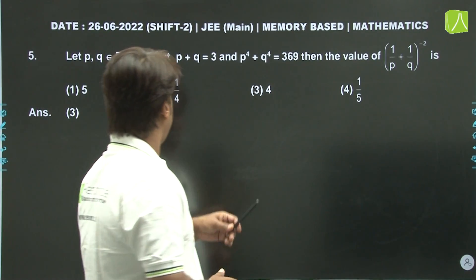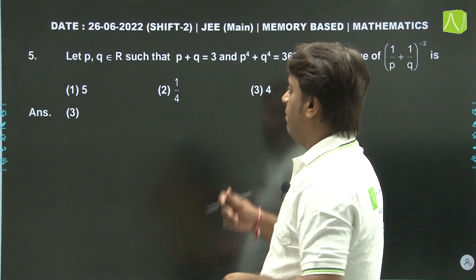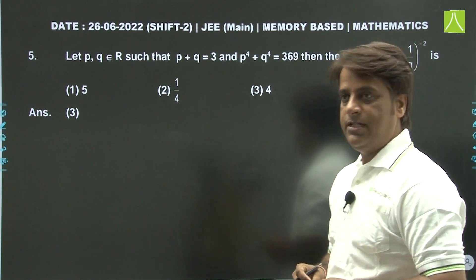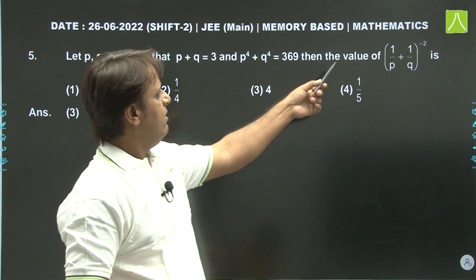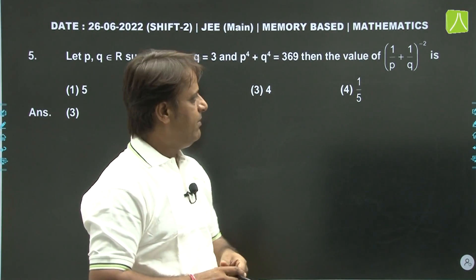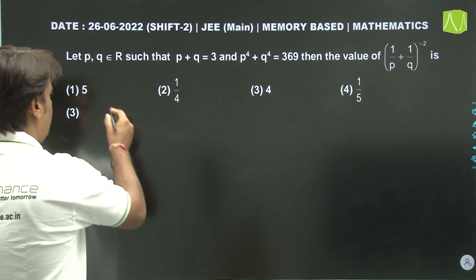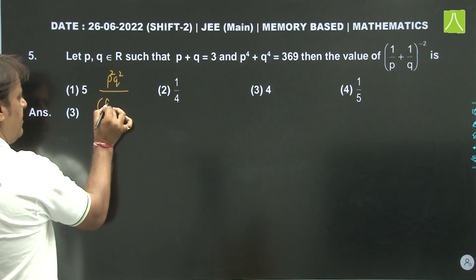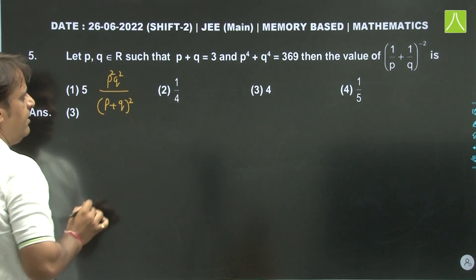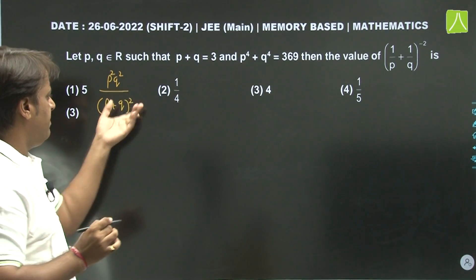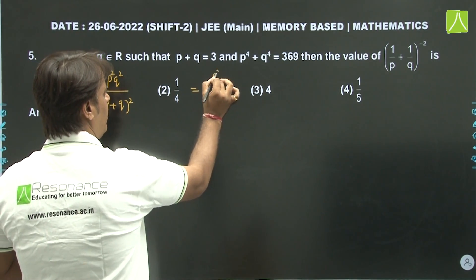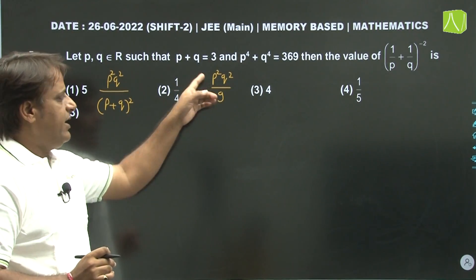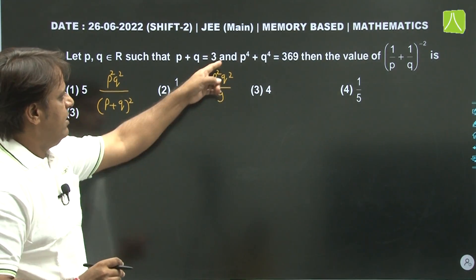Next question: Let P and Q be real numbers such that P + Q = 3 and P⁴ + Q⁴ = 369. We have to calculate the value of (1/P + 1/Q)^(-2), which equals P²Q²/(P+Q)², so P²Q²/9.